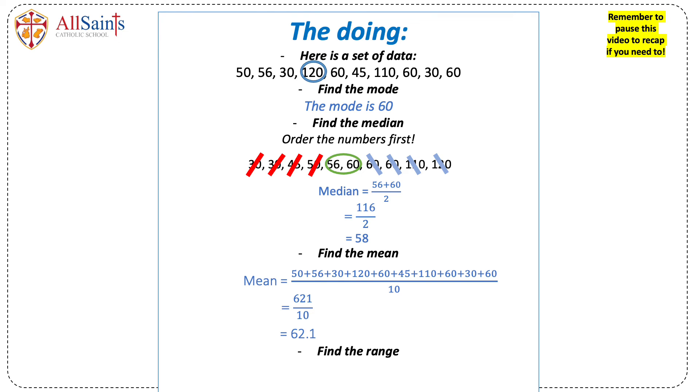To find the range you do the biggest number take away the smallest number, so 120 take away 30, and that will give you 90.